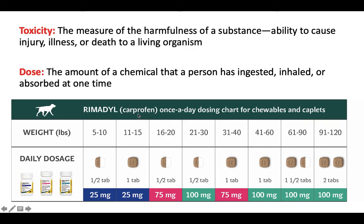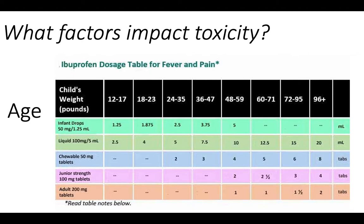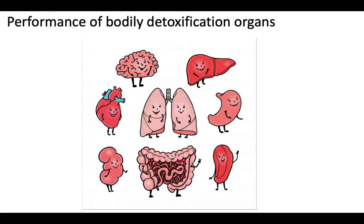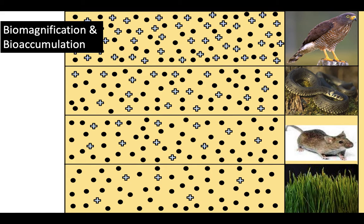Looking at a dosage table for dog medicine, as the dog's weight increases, the dose increases accordingly. There are many factors that impact toxicity, including weight, age—you give different amounts of ibuprofen to a child versus an older adult—your body's ability to digest and absorb the toxin, your genetic makeup, and the performance of detoxifying organs like the kidneys, liver, and intestines. Kidney or liver damage means your body filters toxins less effectively, making them more deadly. Organisms at the top of a food chain are also more susceptible due to biomagnification.